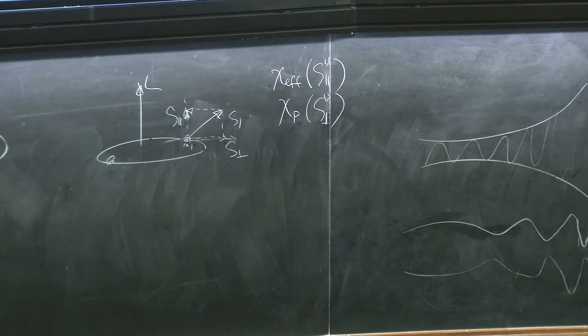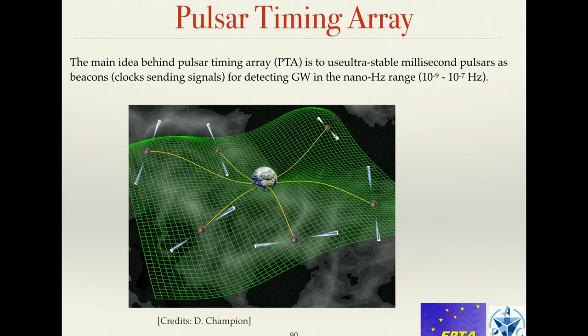Pulsar timing: what is the main idea? For LISA I told you that in principle we need only one arm to measure a gravitational wave signal, but we cannot do that because of laser frequency noise. Now I'm coming to pulsar timing and saying, here we do have one arm. We have a pulsar at one end, and it works as a clock. It's sending ticks at very regular, very stable intervals.